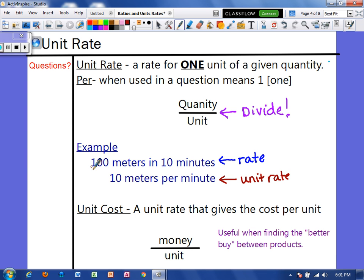So you would take the quantity of 100 meters, divide it by the unit of 10 minutes. 100 divided by 10 is 10. So our unit rate would be 10 meters per minute.